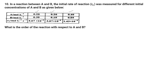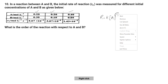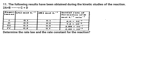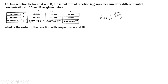The question asks: what is the order of reaction with respect to A and B? We need to find the rate law: rate = k[A]^x[B]^y, where x is the power of A concentration and y is the power of B concentration. Both x and y are unknown. We have three experimental cases to work with.